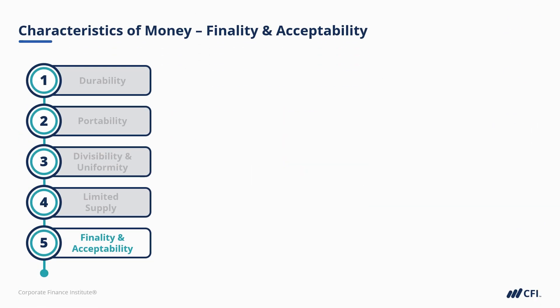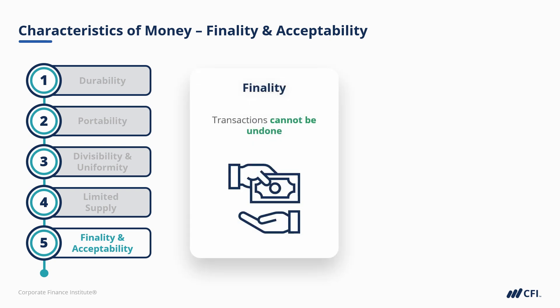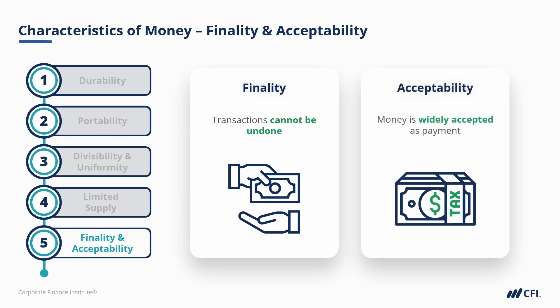Last and most importantly, money must have absolute finality and acceptability. Finality is the thought that if someone pays you with a certain currency, it cannot be undone — once the physical coin or bill passes into your hands, the transaction is completed and final. Acceptability means that for any money to be recognized, it must be widely accepted. Merchants and individuals must have faith and confidence in the money that they're being paid. One quick and easy way that a government can establish acceptability for any money is to decree that it can be used to pay taxes.